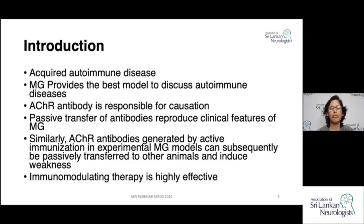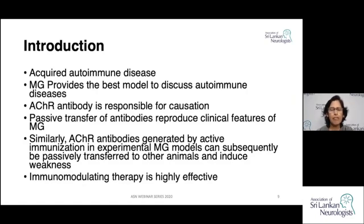It has been possible to produce animal models by injecting acetylcholine receptor and by passive transfer of antibodies, which develop clinical features of myasthenia gravis. It has also been possible to actively immunize subjects with the receptors, then passively transfer the resulting antibodies to animals and develop clinical models. Furthermore, all symptoms of myasthenia gravis can be controlled with standard immunosuppression agents used in clinical practice.